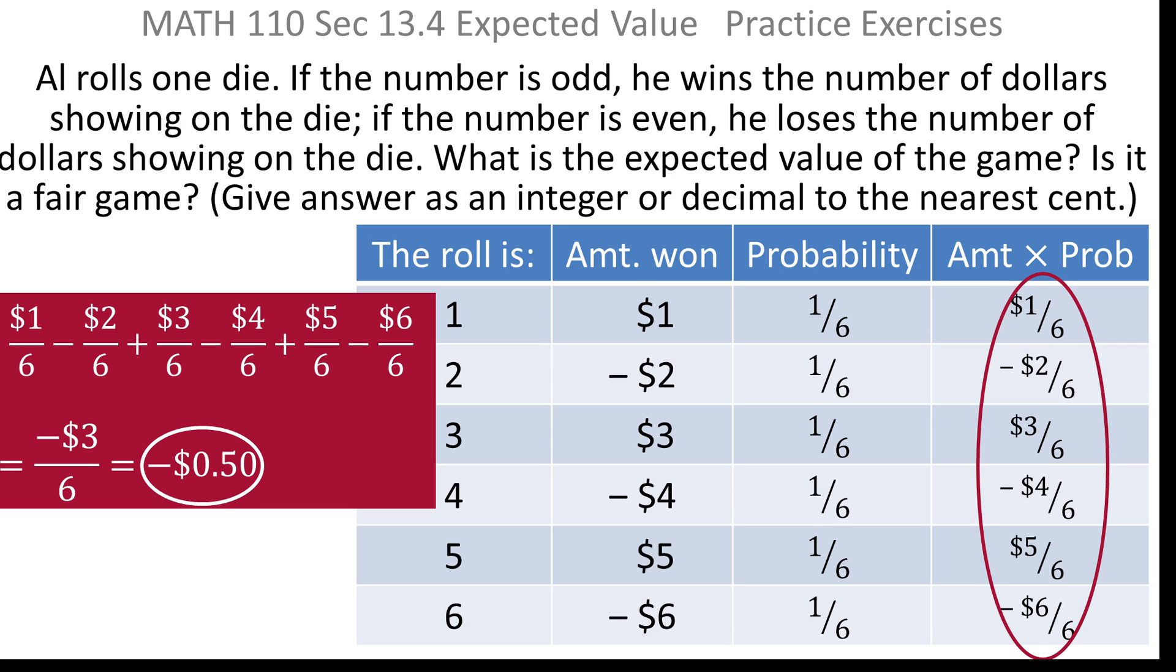So it's negative three dollars over six, and if you divide that out, it comes out to be negative zero point five zero, in other words, that's negative fifty cents.